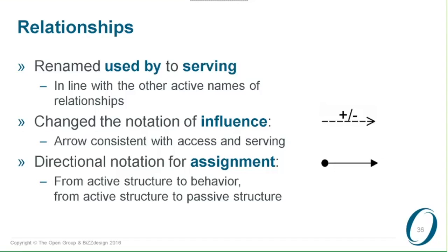We added this new notation; the old one is deprecated in the standard but will stay correct in ArchiMate 3 for a while, so you can still use the old notation — it's not becoming incorrect. But I would advise you to use the new notation because it's much clearer to see what is assigned to what. You typically assign actor structure to behavior, actor structure to passive structure, or actors to roles. So there is a directionality that was already there but is now shown in the notation.